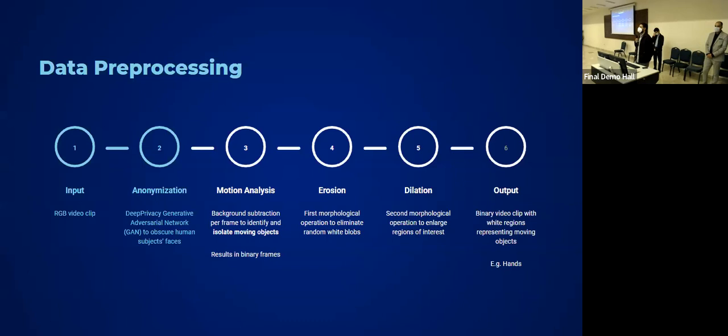We use a background subtraction mechanism on a frame-by-frame basis to identify and isolate the moving objects. This results in a binary frame where the white blobs represent the moving objects and the black background is the still objects. The fourth and fifth stages are basically morphological operations to eliminate any random white noise that's present in the frame. And the dilation is basically an operation to enlarge the region of interest to help our model train better. Lastly, the input is a binary video clip, and we'll be seeing examples right now.